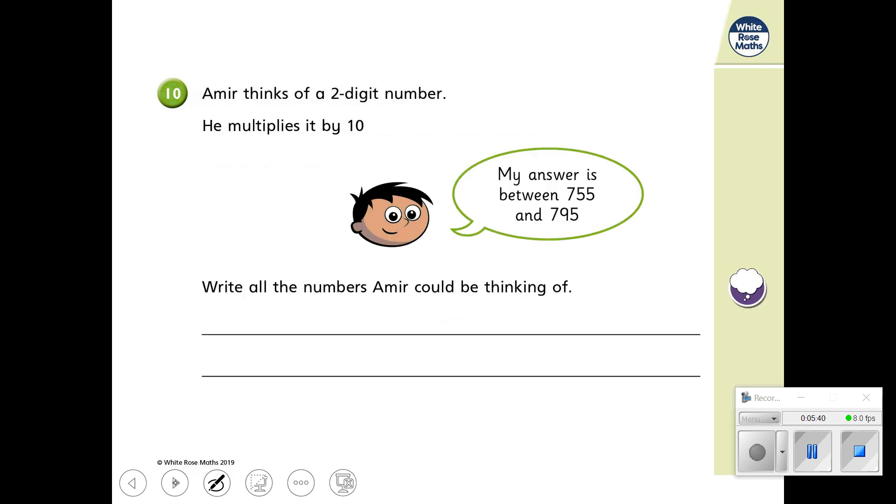Amir thinks of a two-digit number. He multiplies it by 10. Write all the numbers Amir could be thinking of. Now, this is quite a tricky one, because he's got a two-digit number, he multiplies it by 10, and the answer is here. And it's very easy just to tell me the multiple of 10 rather than the two-digit number.